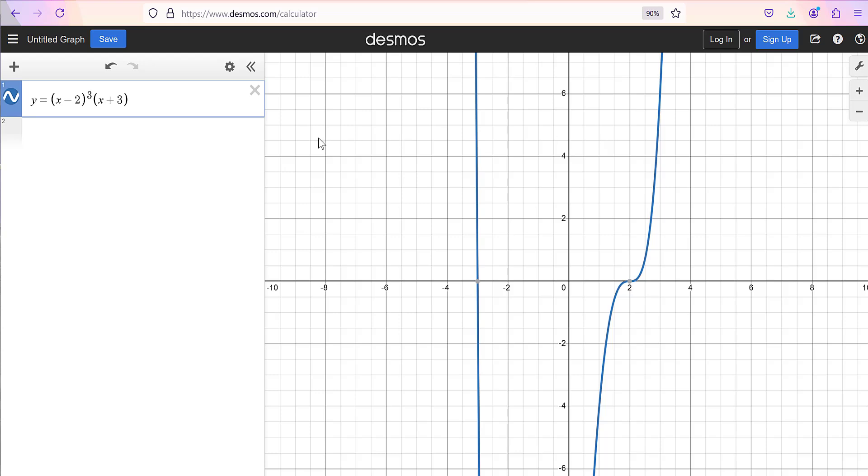Hello, in this video I'd like to show how to graph a polynomial in Desmos. Here I've entered the polynomial and hit enter, and I see that the graph crosses the x-axis at x equals negative 3. So I know that that's a root, and I can also see that x plus 3 is a factor.